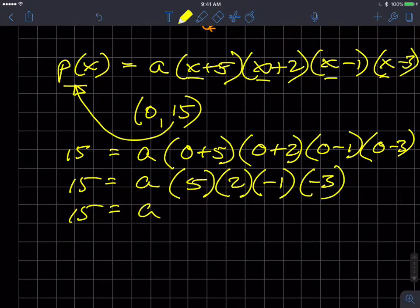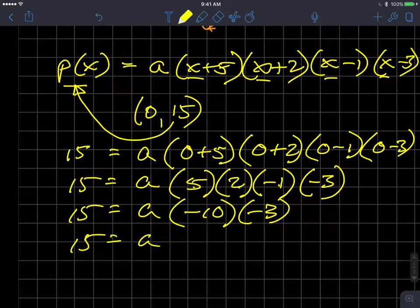15 equals a, what is that, negative 10 times negative 3. I did these guys. 2 times 5 is 10 times negative 1 is negative 10. I get 15 equals a. And what's that, 30? And so if I divide both sides by 30, I get a is equal to 1 half.